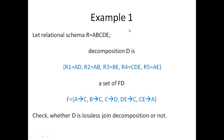Now I describe Example 1. Let relation schema R = (A, B, C, D, E), where A, B, C, D, E are five attributes. Decompose this relation into: R1 = AD, R2 = AB, R3 = BE, R4 = CD, R5 = AE. The set of functional dependencies given is: A→C, B→C, C→D, D→C, CE→A. Check whether the decomposition is lossless join decomposition or not.